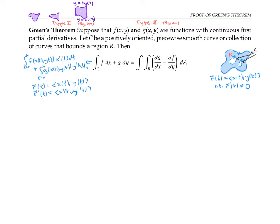Type two regions are like type one regions turned sideways. In this case, the left and right sides might be curves, and the top and bottom are straight lines — those straight lines are allowed to collapse to points. What's important is that the left and right curves can be written as x as a function of y. So x equals k₁(y) for the left curve and x equals k₂(y) for the right curve. Those curves need to satisfy the horizontal line test so that x will be a legitimate function of y.